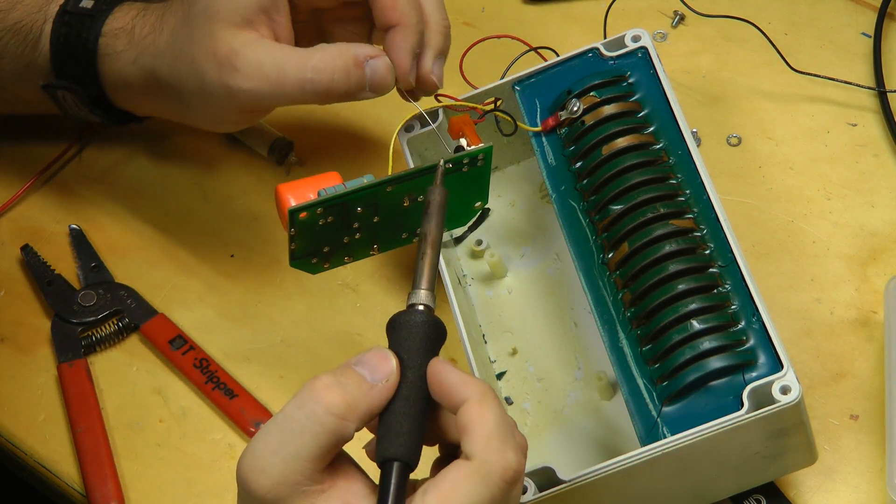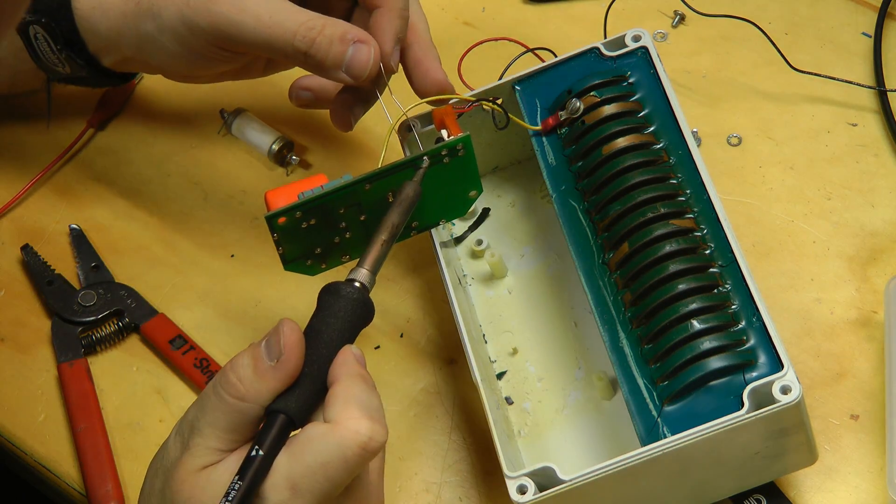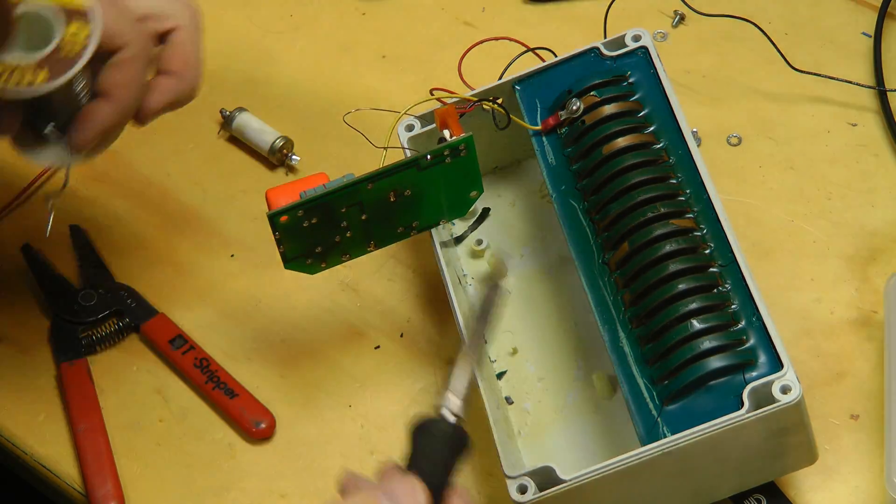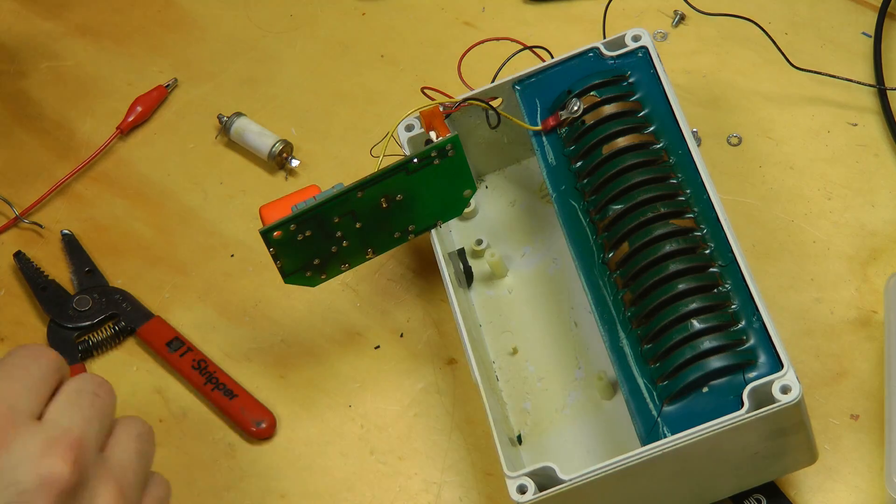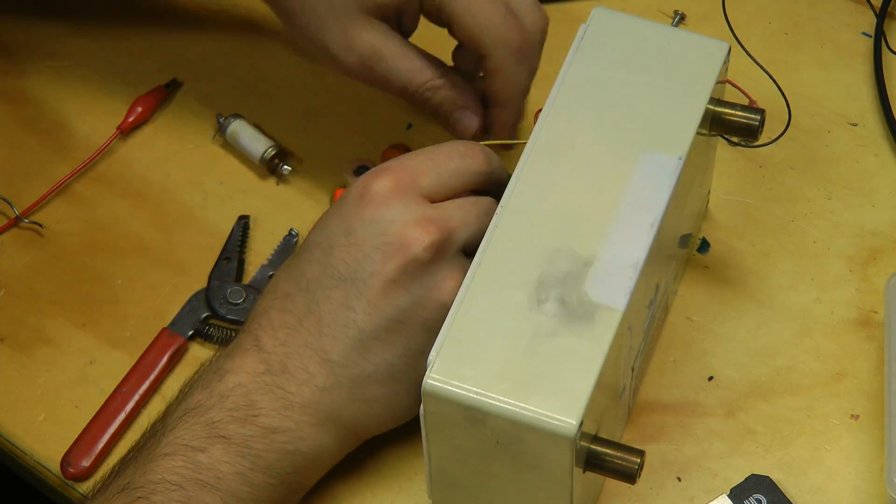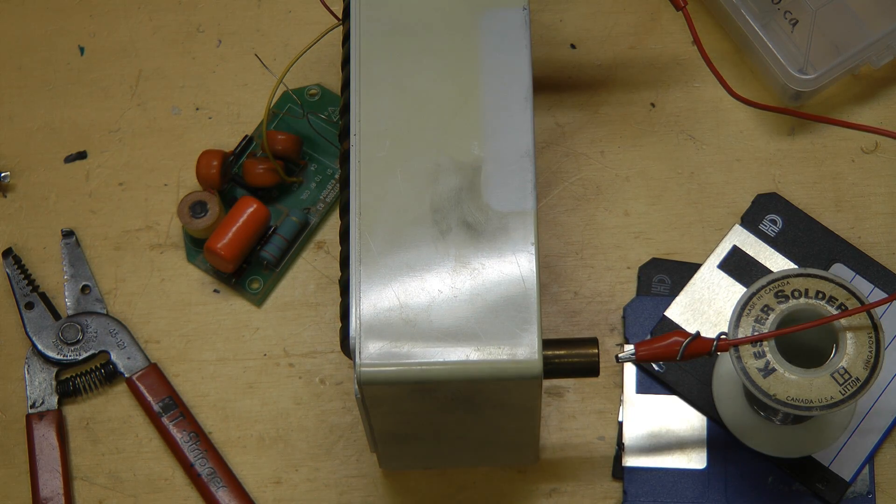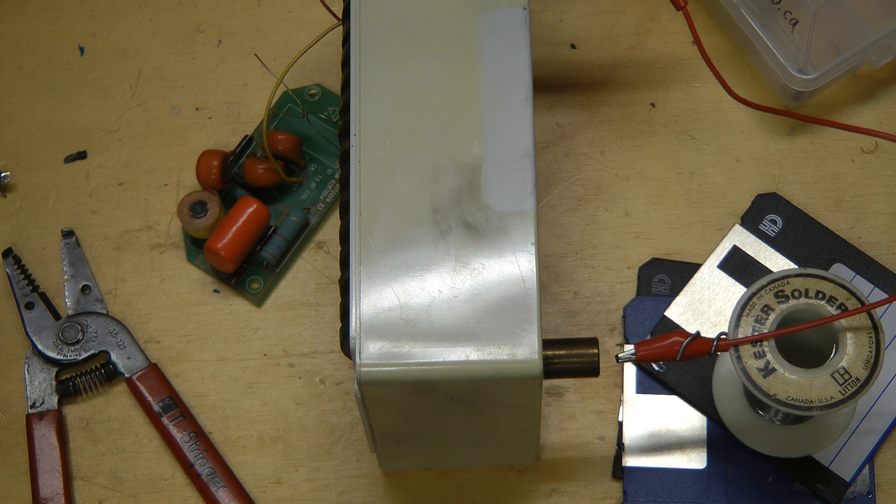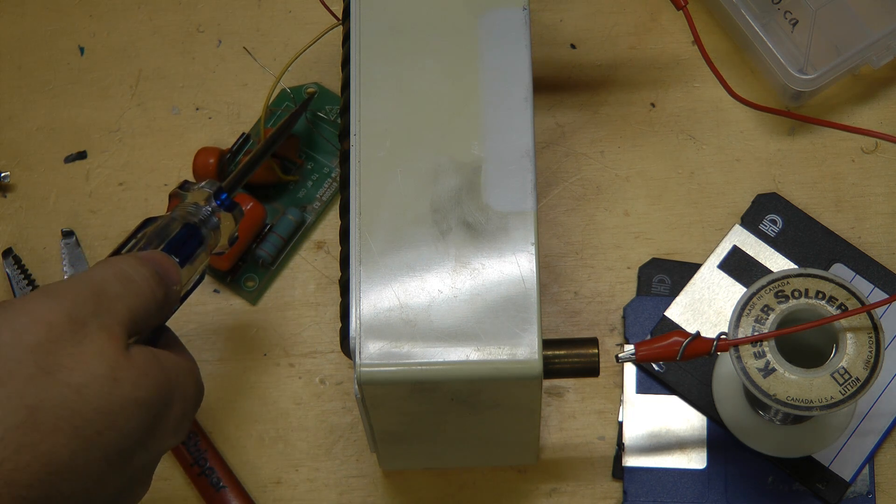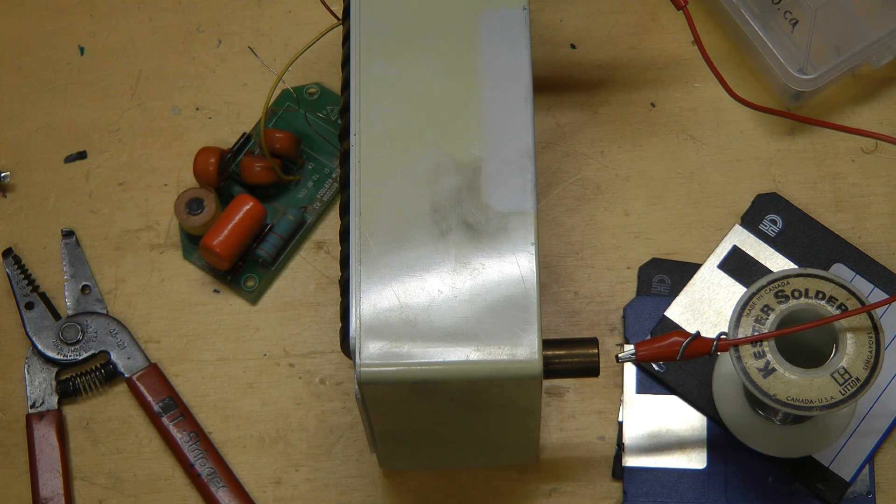Temporarily we'll just replace the spark gap with a bit of wire that we can adjust the gap on. Okay, that's too small a gap. Discharge the caps. Let's try again.